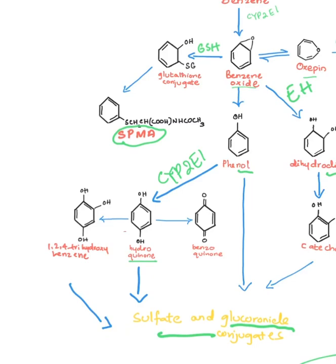Phenol converts and hydrolyzes into hydroquinone through CYP2E1 — this is phase one metabolism. Hydroquinone is really important because once it is converted into benzoquinone, it generates reactive oxygen species through redox cycling.